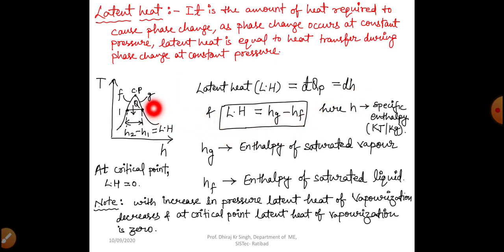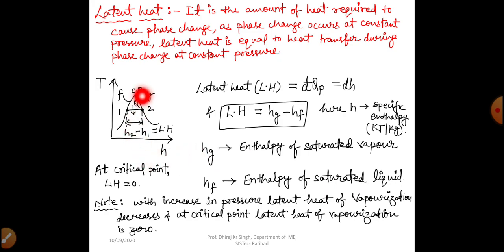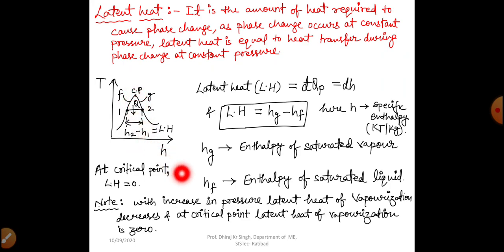Latent heat equals H_G minus H_F, where G stands for the saturated vapor line and F stands for the saturated liquid line. H is specific enthalpy in kilojoules per kilogram. H_G is the enthalpy of saturated vapor and H_F is the enthalpy of saturated liquid. At the critical point, latent heat will be 0 because points 1 and 2 coincide, making H1 and H2 equal. As pressure increases, the latent heat of vaporization decreases, and at the critical point it becomes 0.